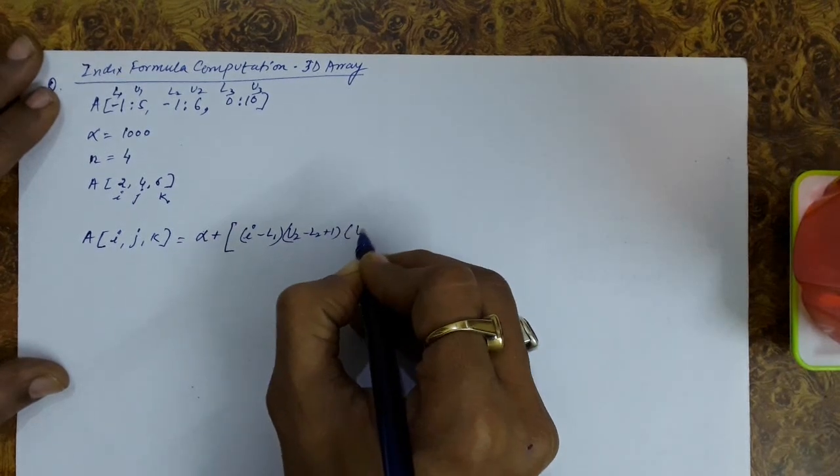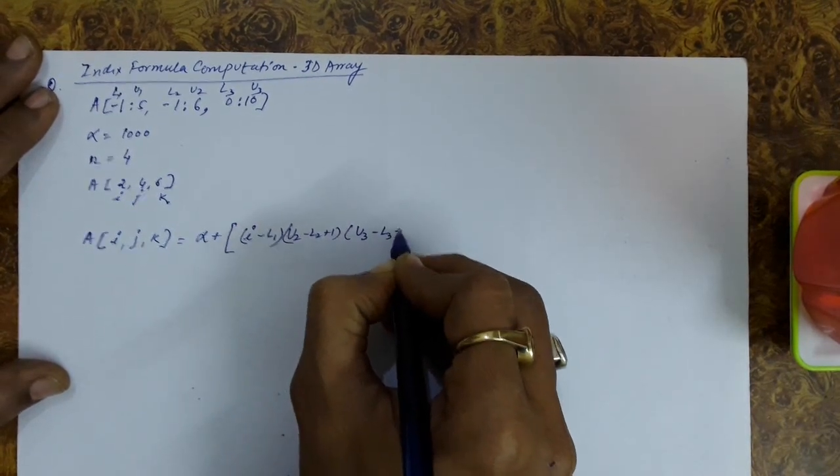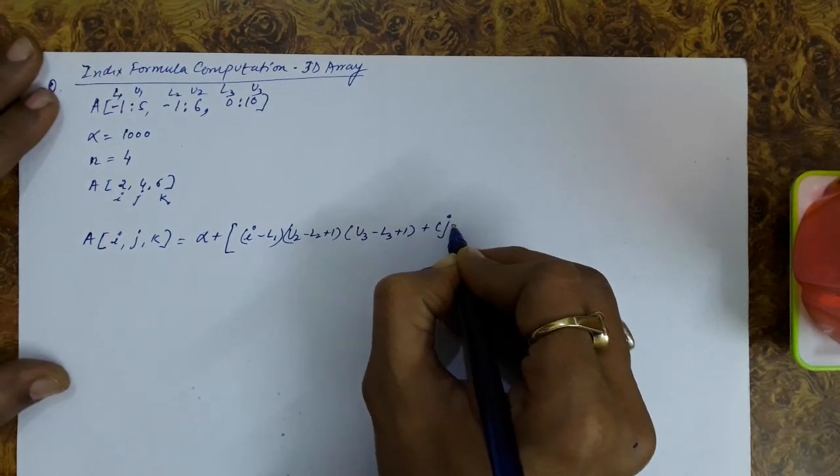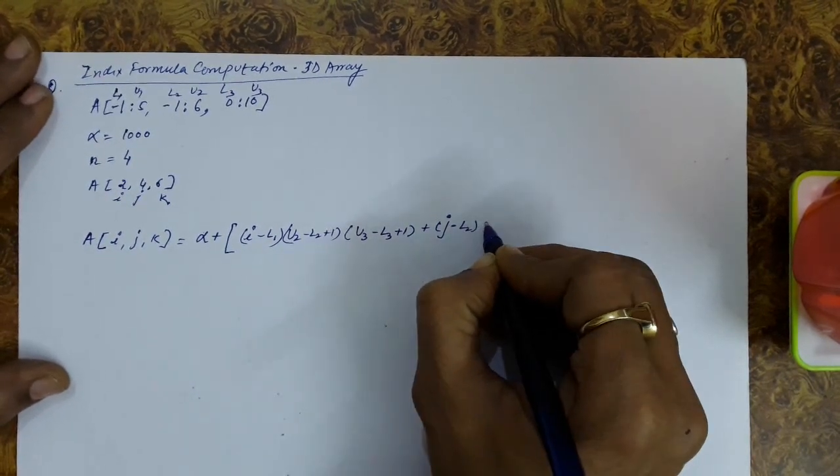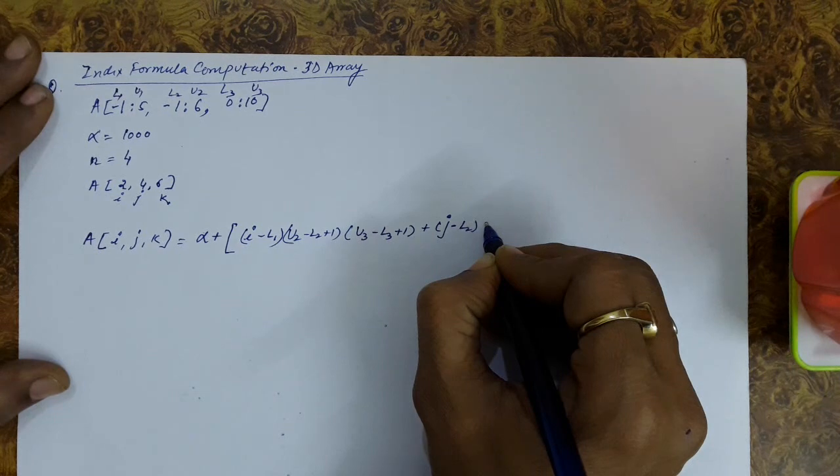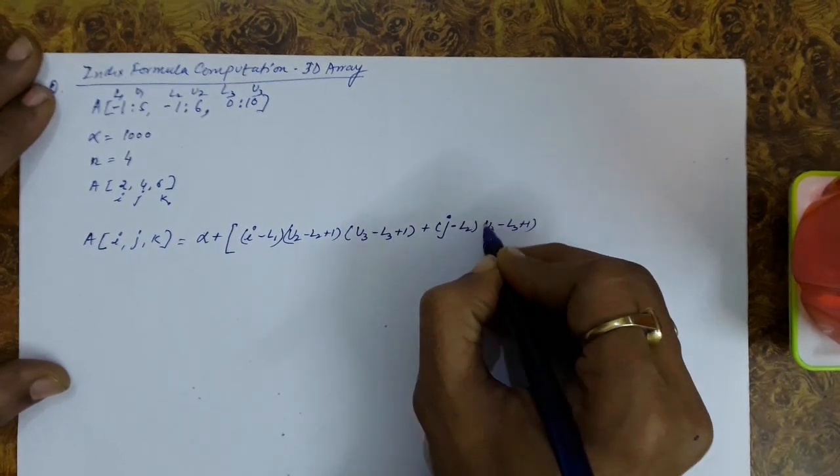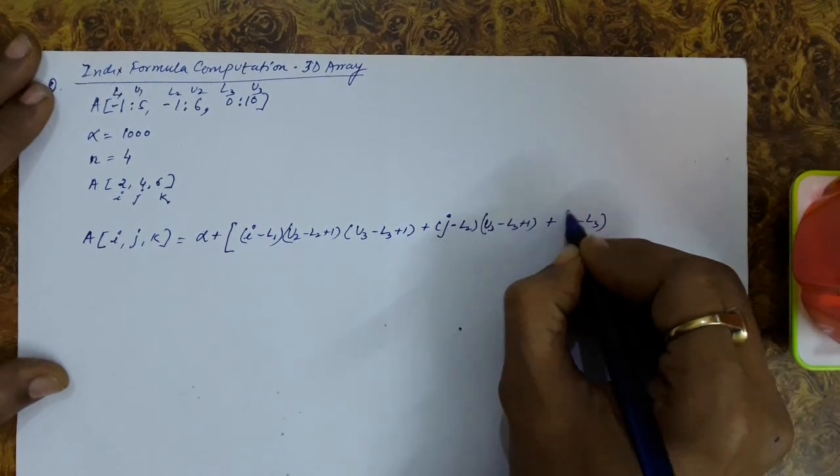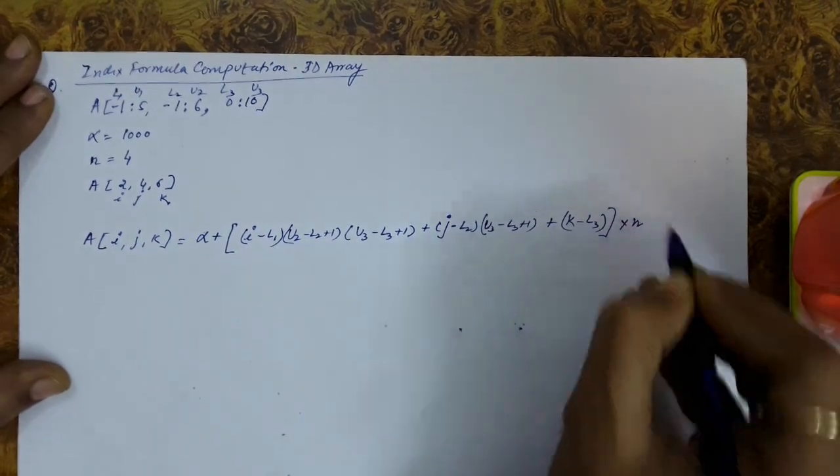Plus (j minus l2) into (u3 minus l3 plus 1) plus (k minus l3), whole quantity multiplied with n.